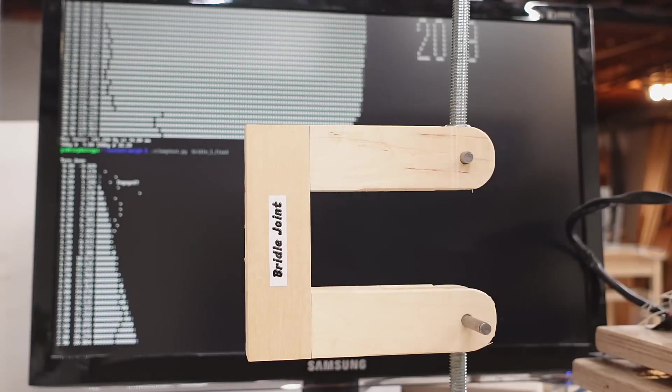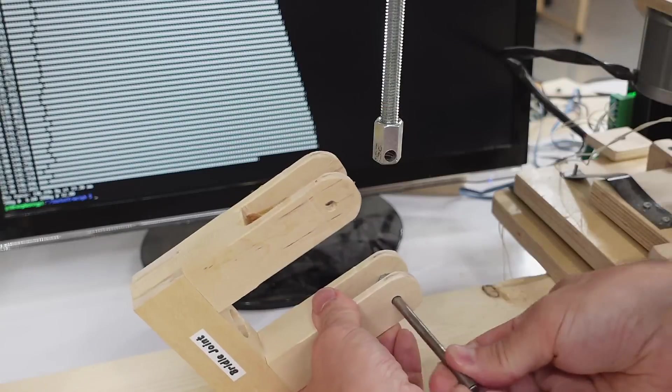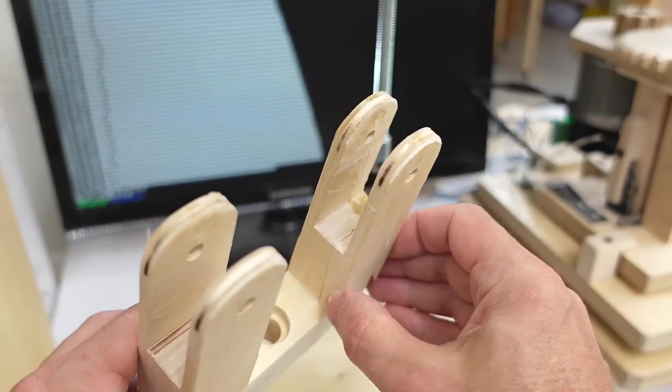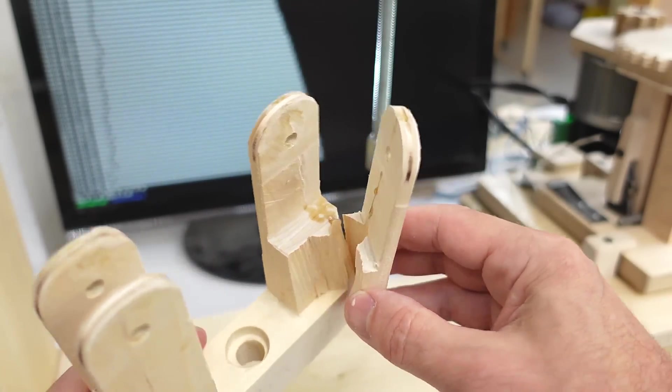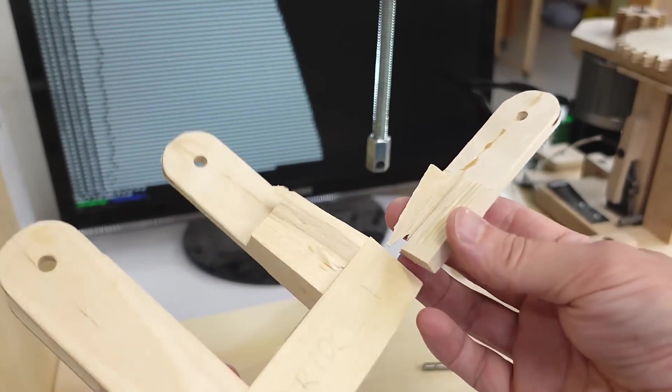And, this is the repaired bridle joint. So, this got up to 146 which is more than before I fixed it. And, it broke here which is not the place I glued it. So, a new failure.